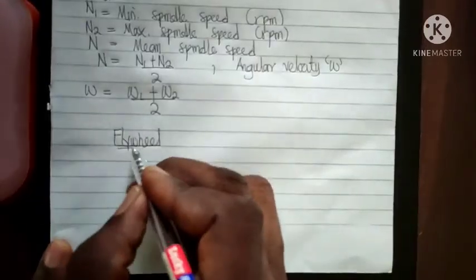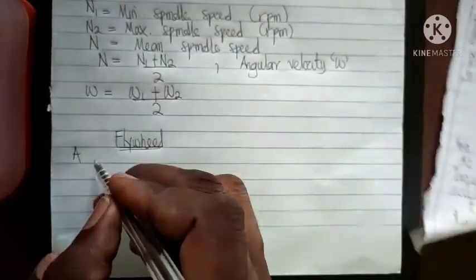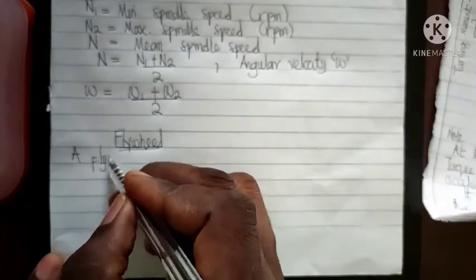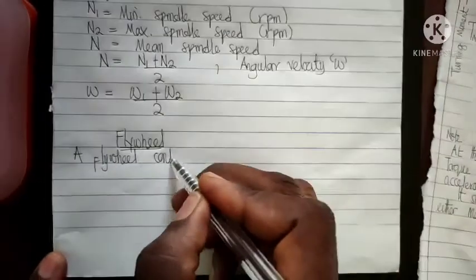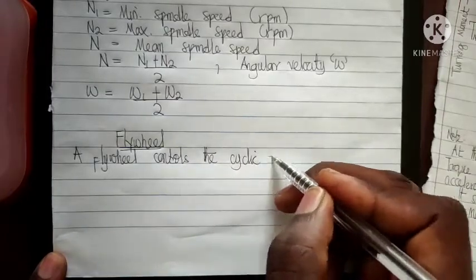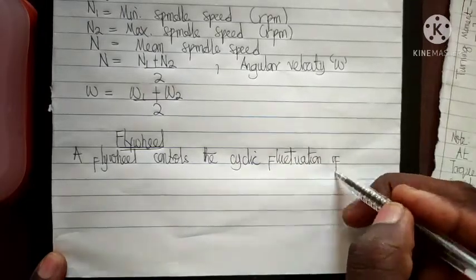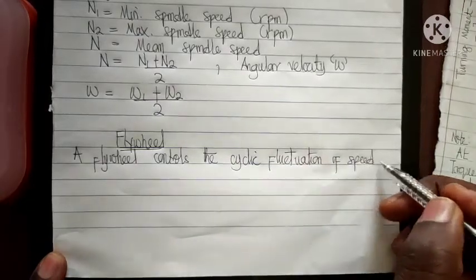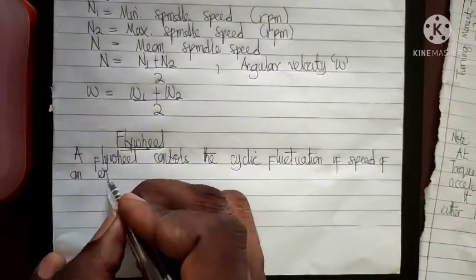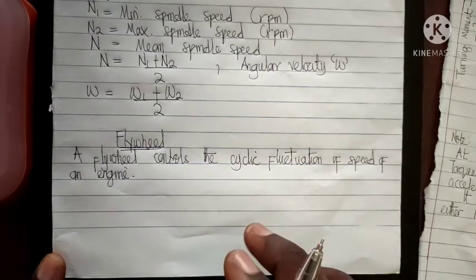A flywheel is always incorporated in an engine to reduce or prevent large fluctuation of speed. The flywheel controls the cyclic fluctuation of speed of an engine.